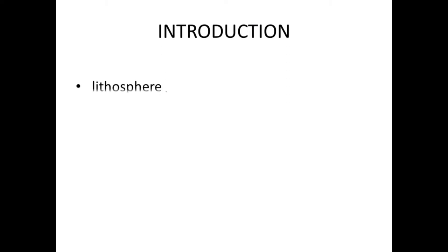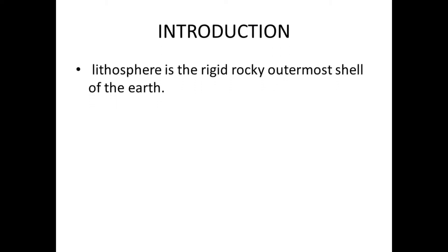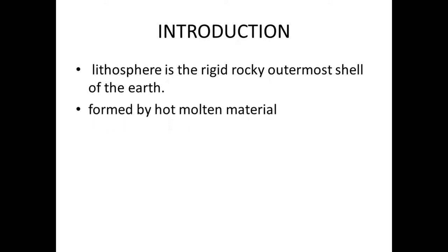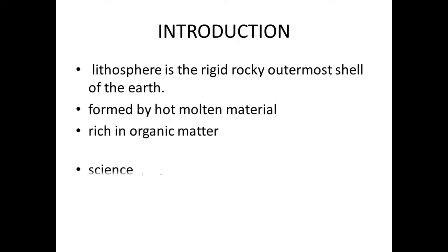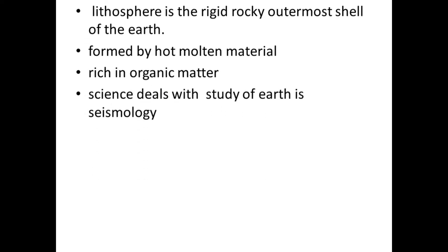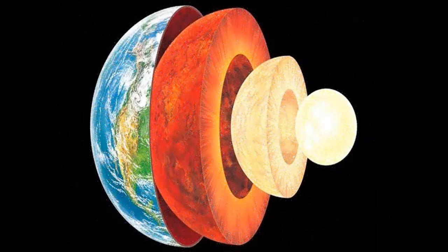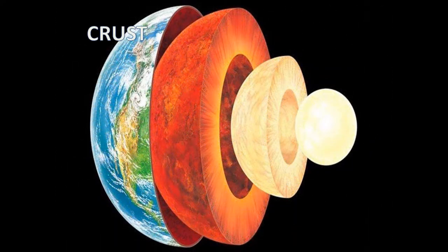The lithosphere is the rigid rocky outermost shell of the earth, formed by hot molten material and rich in minerals. The science that deals with the study of earth is known as geology. It is divided into three parts: crust, mantle, and core.